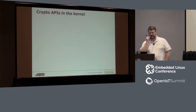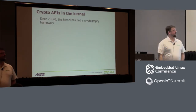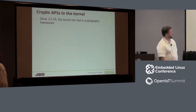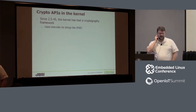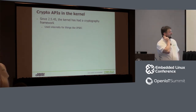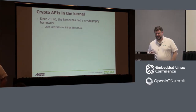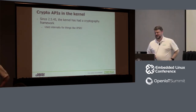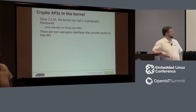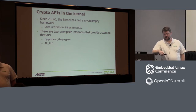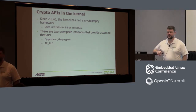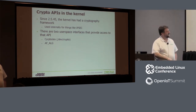Let's dig into the crypto APIs in the kernel. Around 2005, the kernel gained an internal cryptographic framework, brought in to accelerate IPsec and do calculations in a uniform way. That's all inside the kernel, but we want to get from user space down. This is where we start looking at user space APIs. The kernel provides two APIs: CryptoDev and AF_ALG. These are user space interfaces that provide hardware abstraction, allowing your program to run independently of whatever underlying hardware is present.